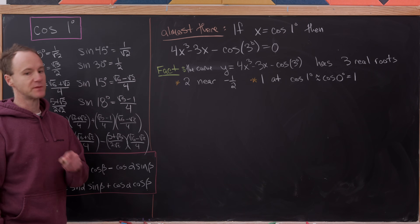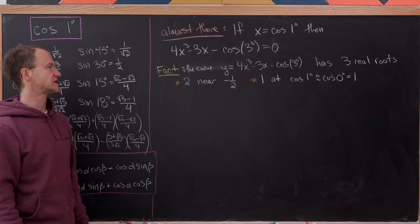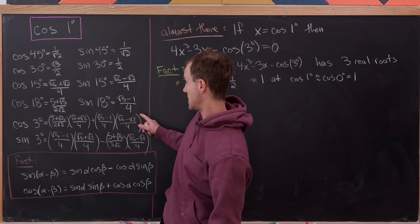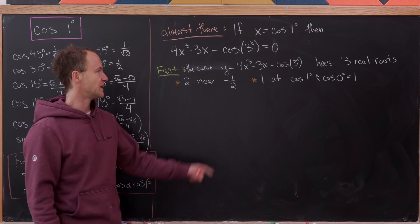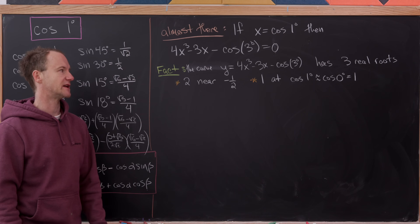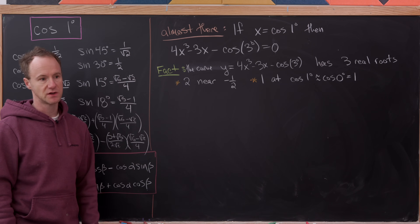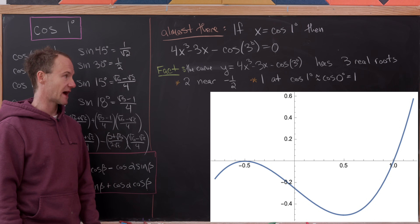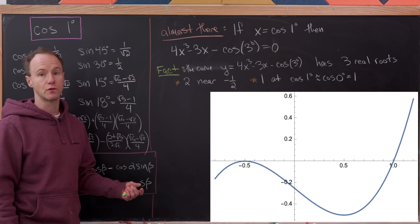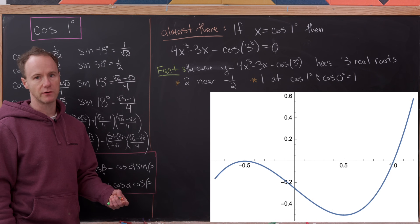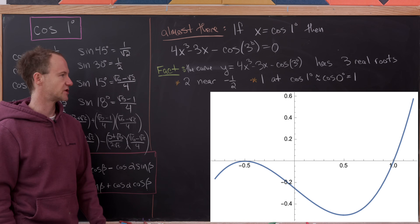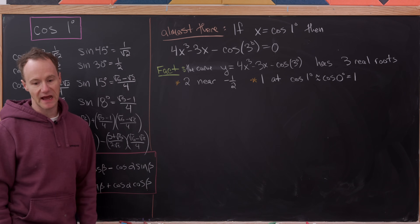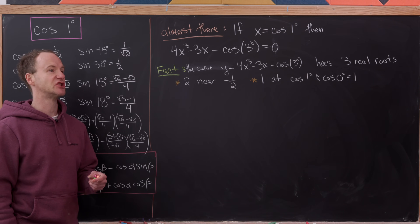So if x is the cosine of 1 degree, then 4x³ minus 3x minus cos(3°) equals 0, where cos(3°) is written in the form we derived. The curve defined by 4x³ minus 3x minus cos(3°) has three real roots: two are near minus 1/2 and the other is near x equals 1. Since cosine of 0 is 1 and cosine of 1 degree is very close to cosine of 0, we want the positive root near 1, which we'll easily be able to identify.